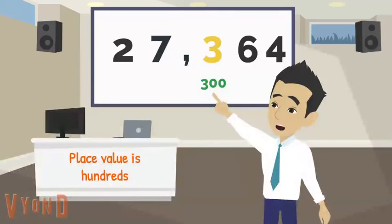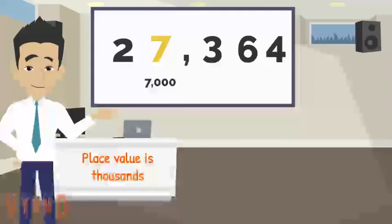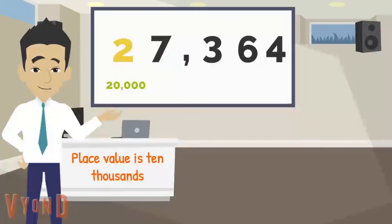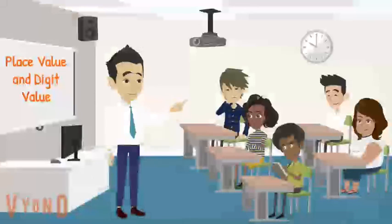What is the digit value of 3? The answer is 300, because its place value is hundreds. What is the digit value of 7? The answer is 7,000, because its place value is thousands. What is the digit value of 2? The answer is 20,000, because its place value is ten-thousands.